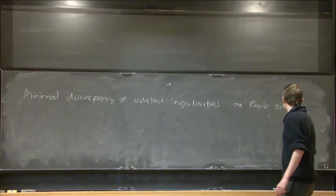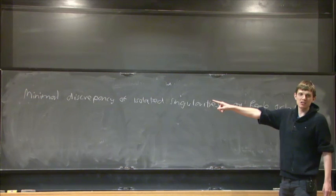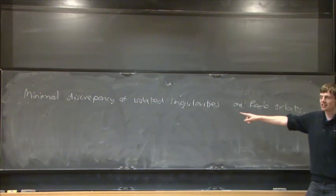There are three objects in the title: minimal discrepancy, which I don't expect you to know, isolated singularity — well, I'll explain that — but you should know that.